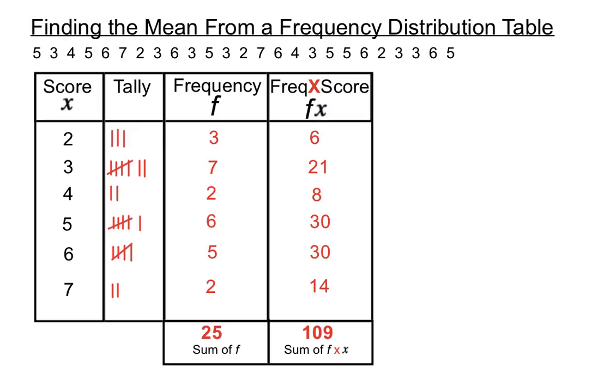So how we find the mean is we take the fx column and divide by the f column. So this is the arrangement for finding the mean from a table. We create an fx column and add that up, and put the sum of the fx column over the sum of the f column.